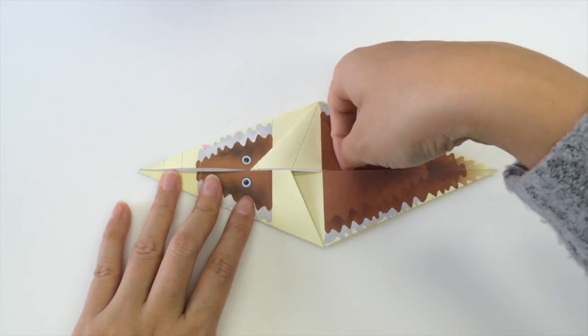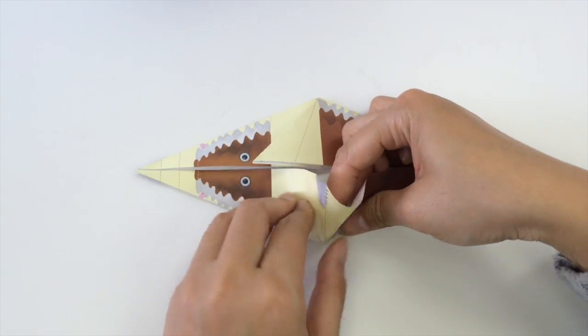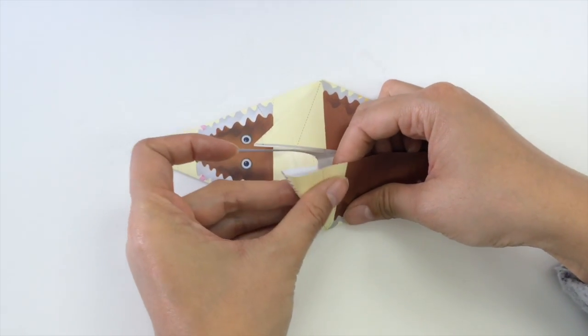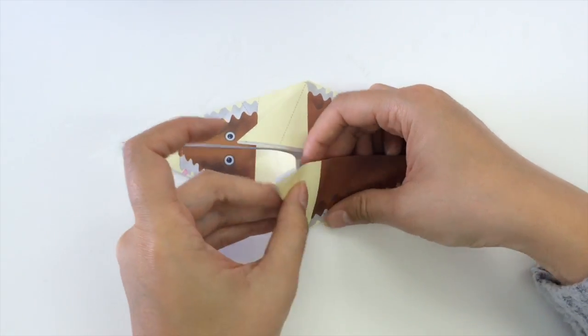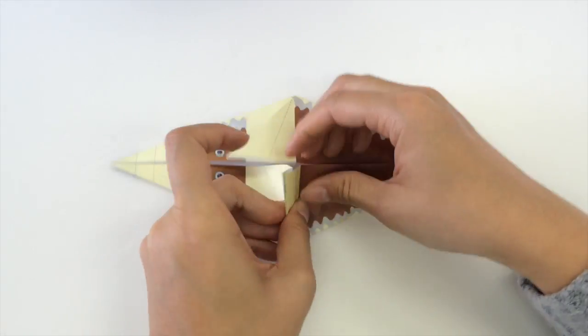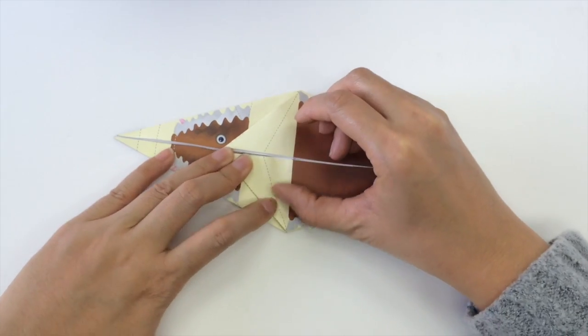And we will do the same for the bottom. Next, we'll insert our finger and pull the whole flap out and press it so that we get a corner tip and fold it back to the left.